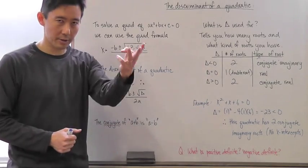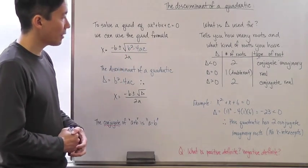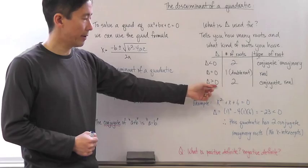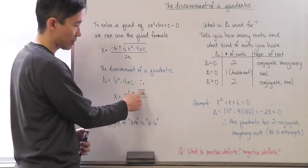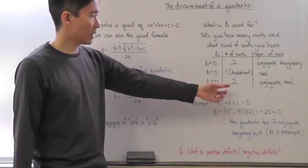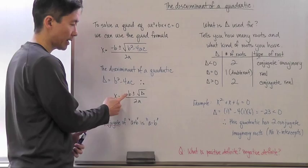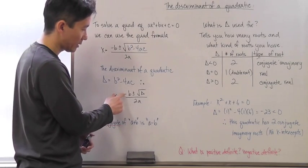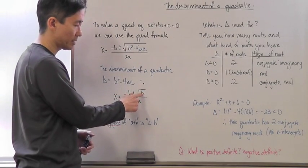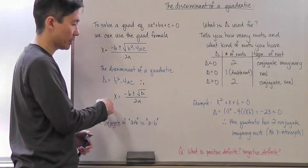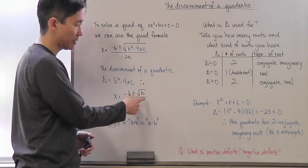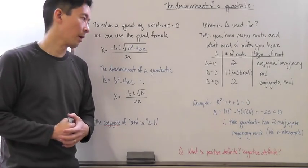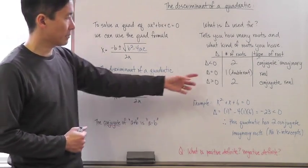If Delta is greater than zero, the value under the radical is a positive number, which means you get two roots. Those two roots are conjugates of each other and are real numbers — one is (-b + √Δ) / 2a and the other is (-b - √Δ) / 2a. Notice they are conjugates of each other as well as being real numbers.